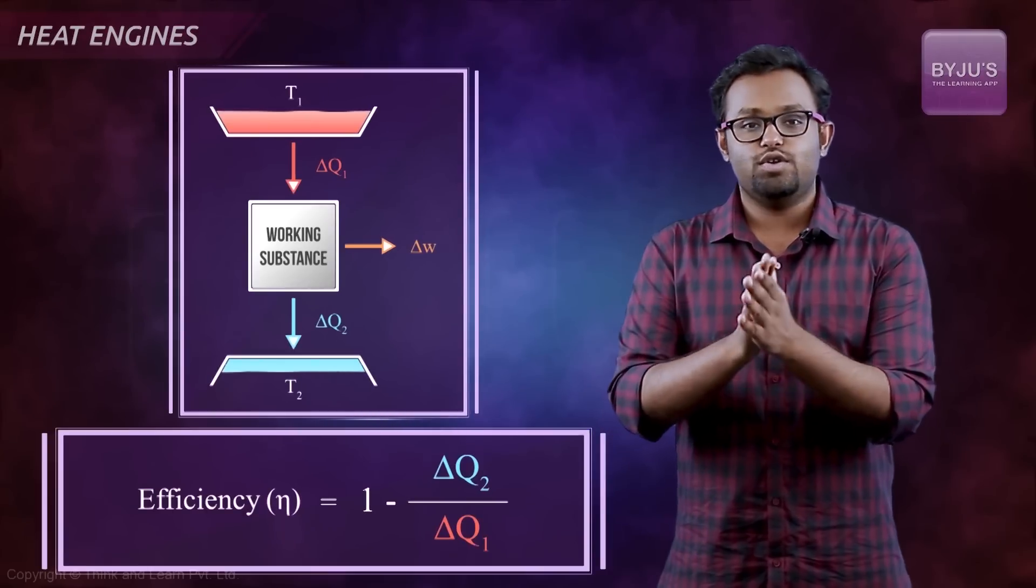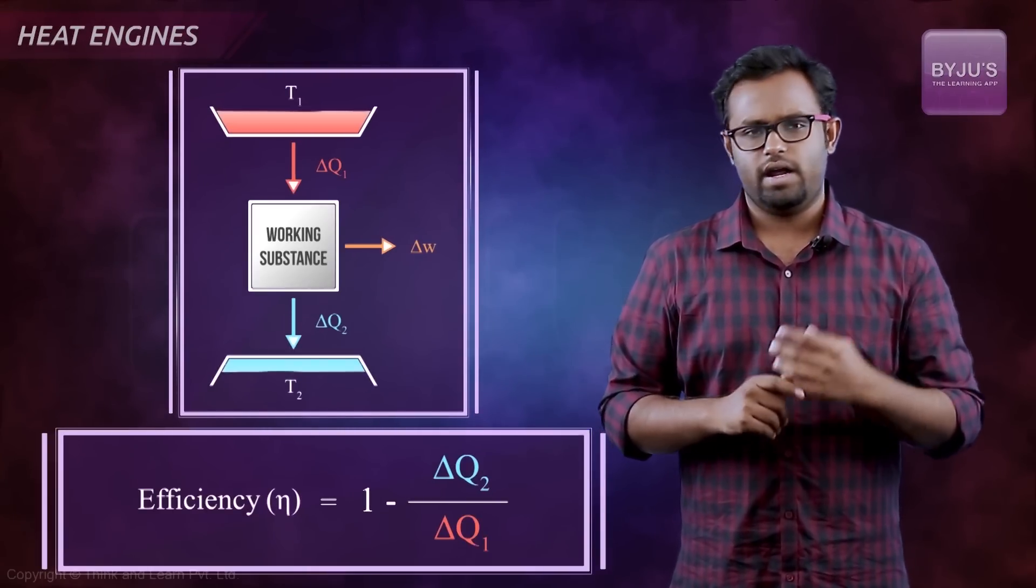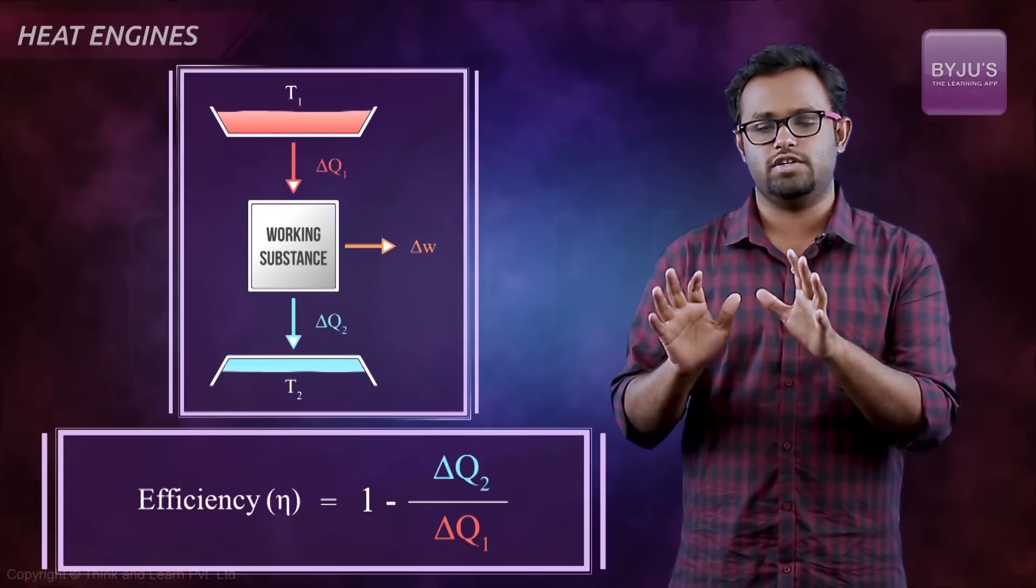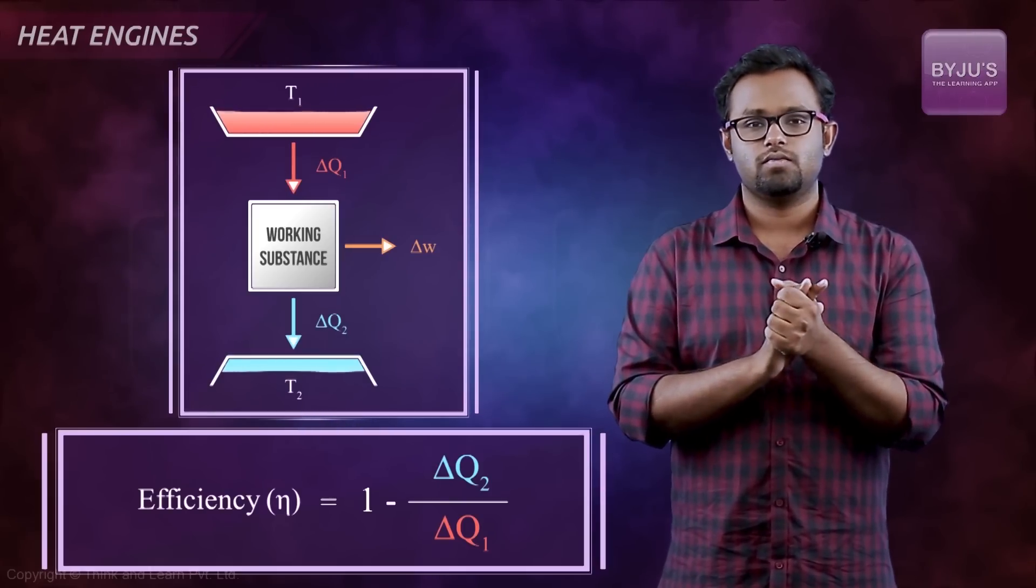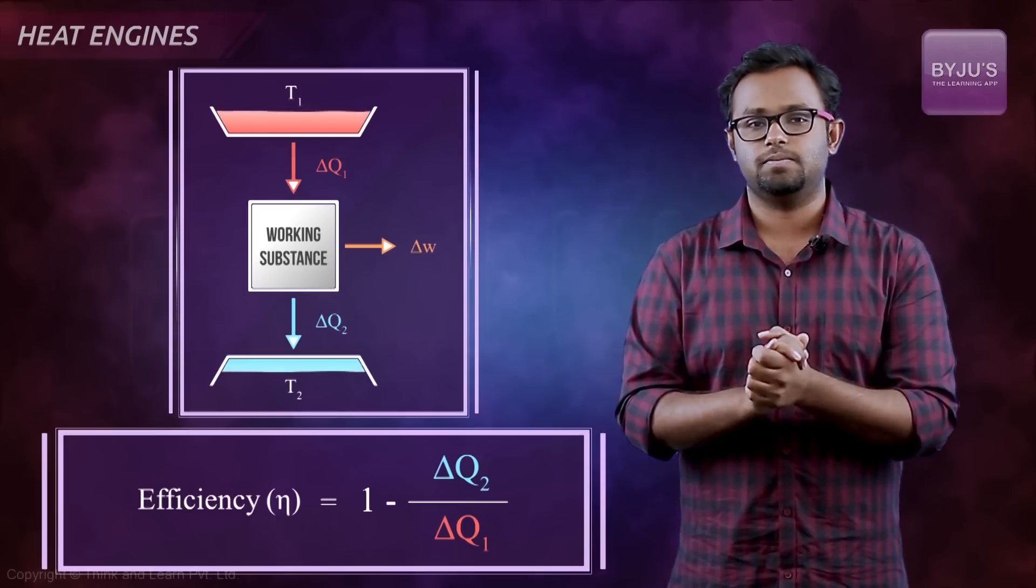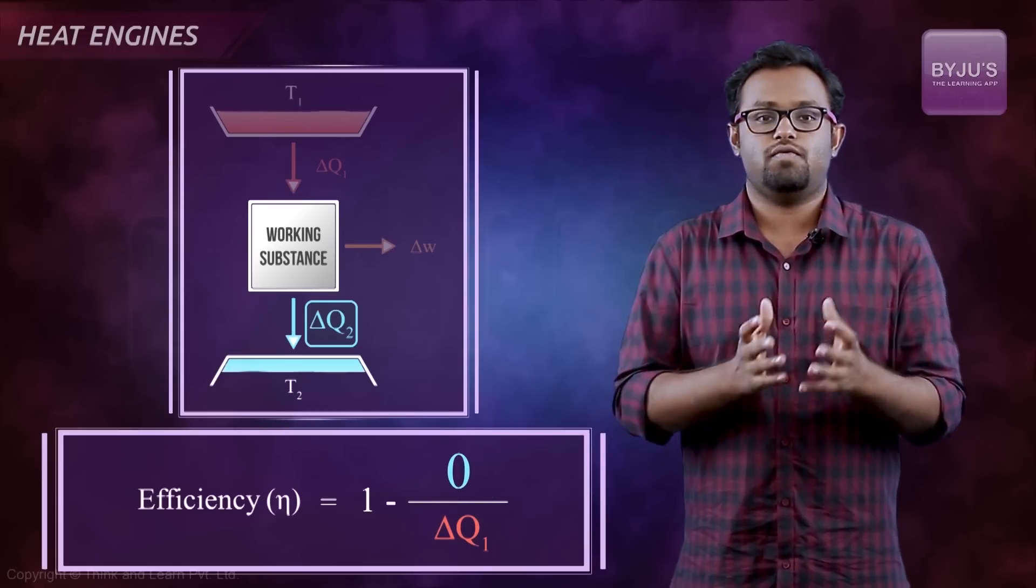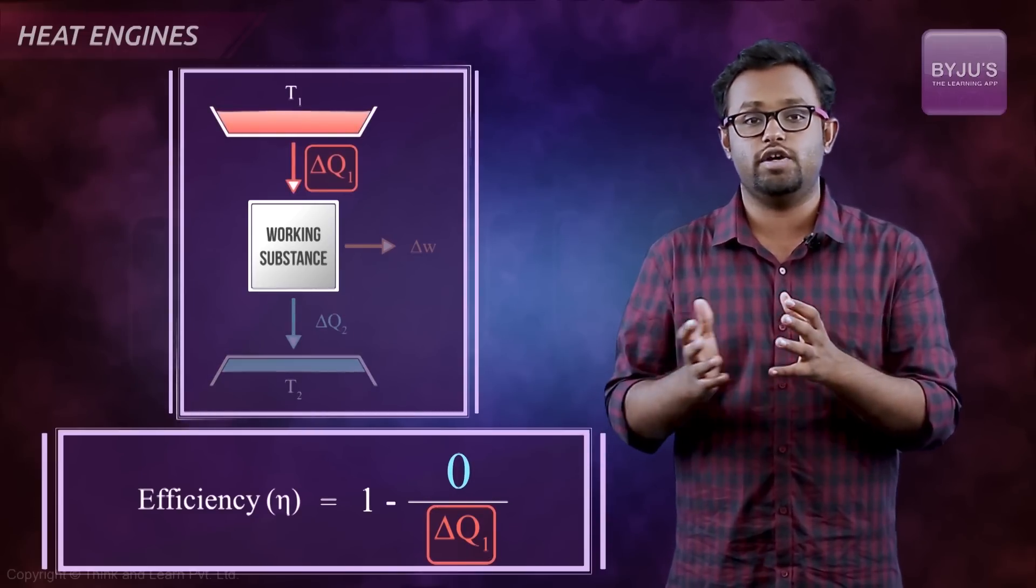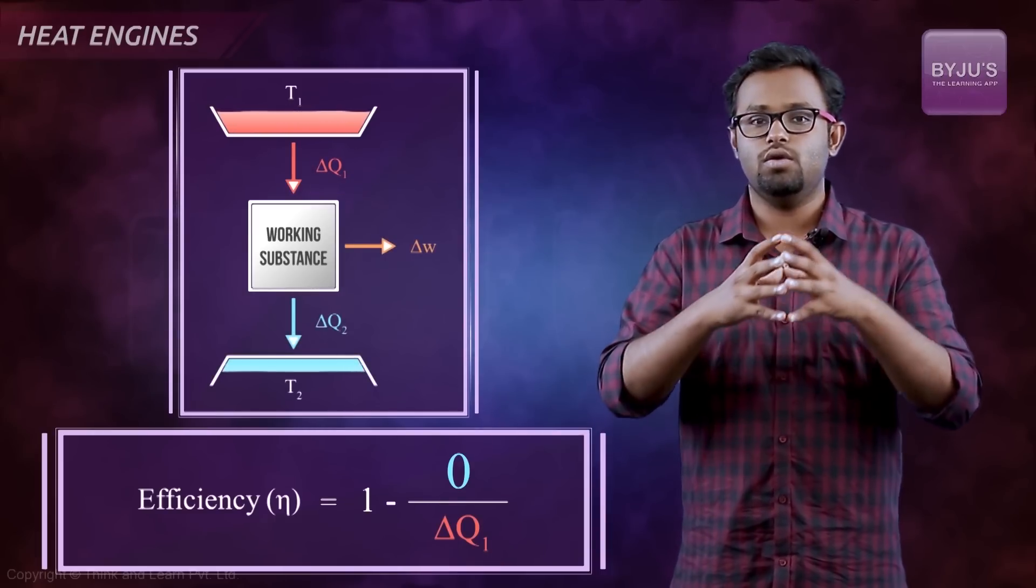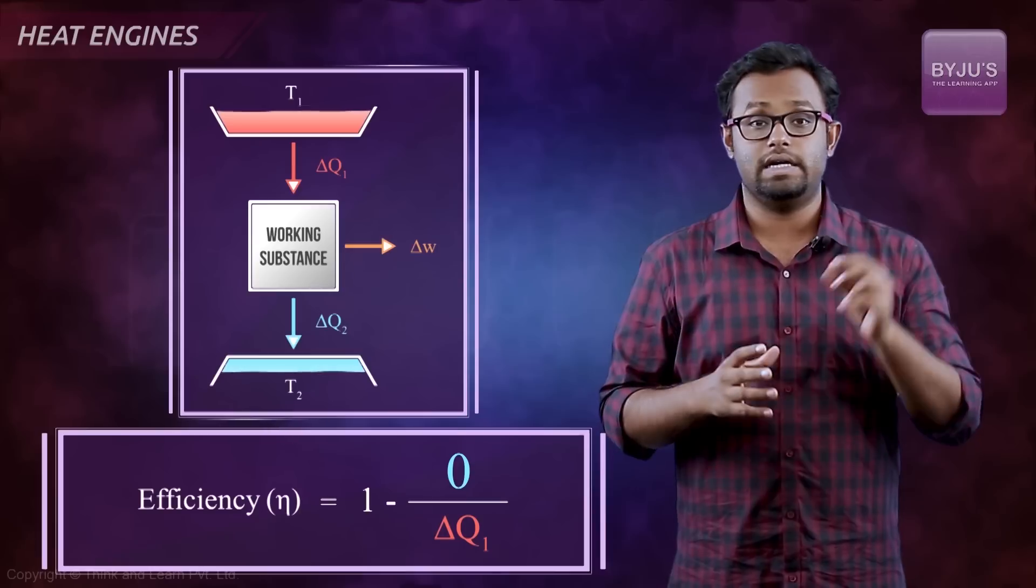When I saw this equation for the first time when I was in 10th or something, I felt you can totally make the efficiency 100%. How? By making that delta Q2 equals to zero. Because of course, you can't make delta Q1 equals to infinity. You cannot give infinite energy. What you can do is somehow make sure that the engine doesn't dissipate any heat, that delta Q2 is zero.